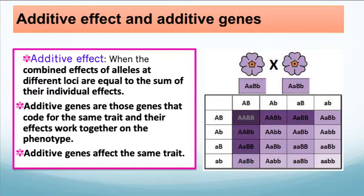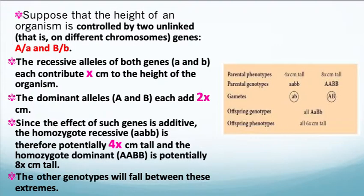When the combined effects of alleles at different loci are equal to the sum of their individual effects, these are called additive genes — genes that code for the same trait whose effects work together on the phenotype. For example, suppose that the height of an organism is controlled by two unlinked genes, meaning genes on different chromosomes. You have capital A and little a, and capital B and little b — genes that contribute to height and are on different chromosomes.